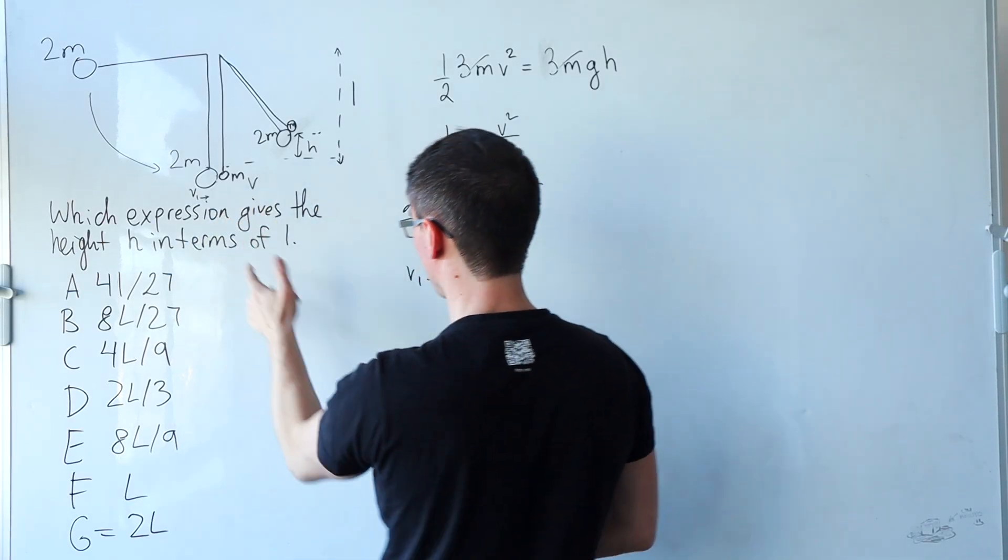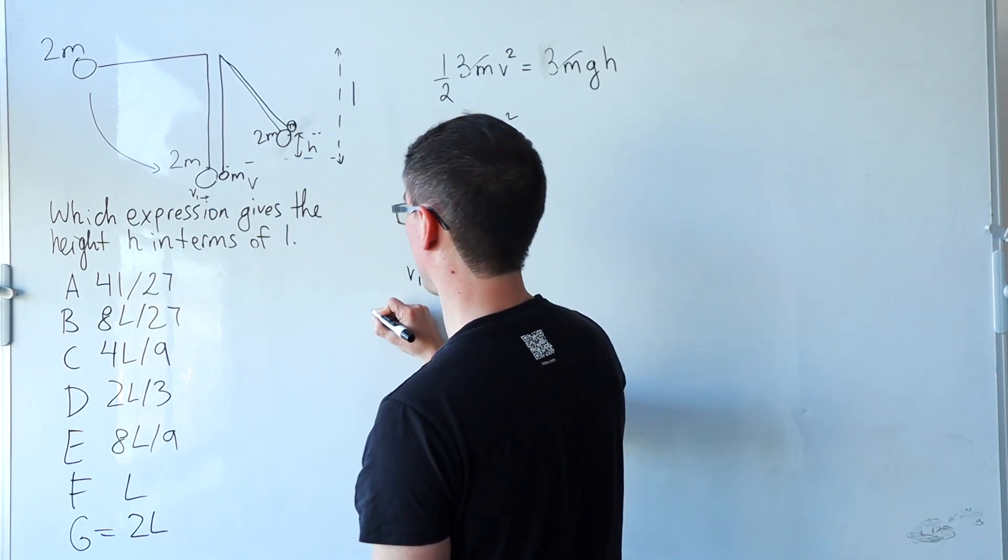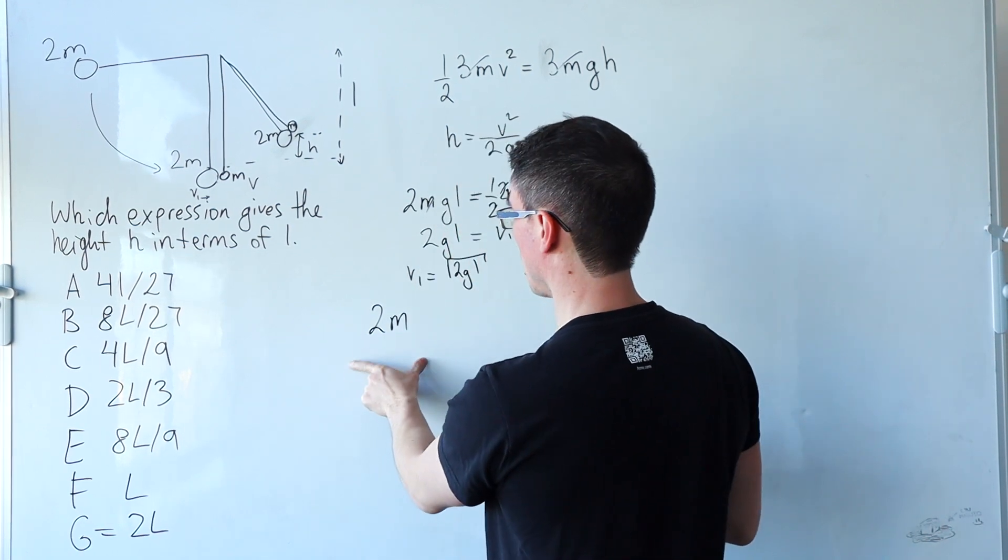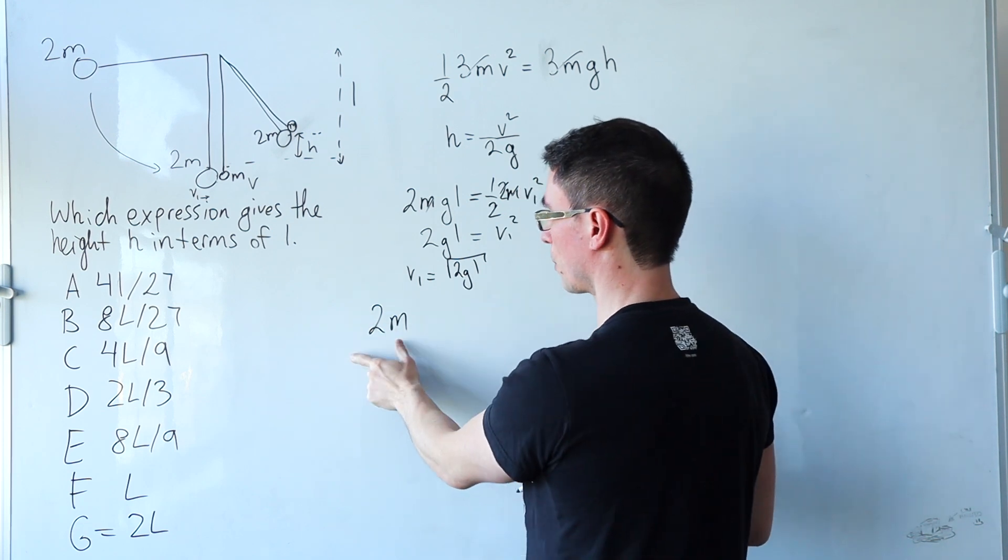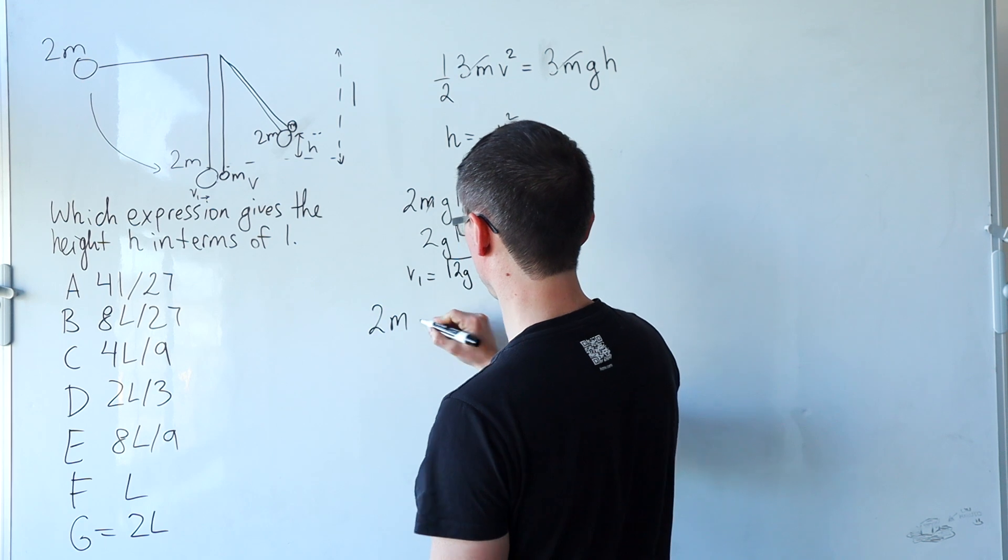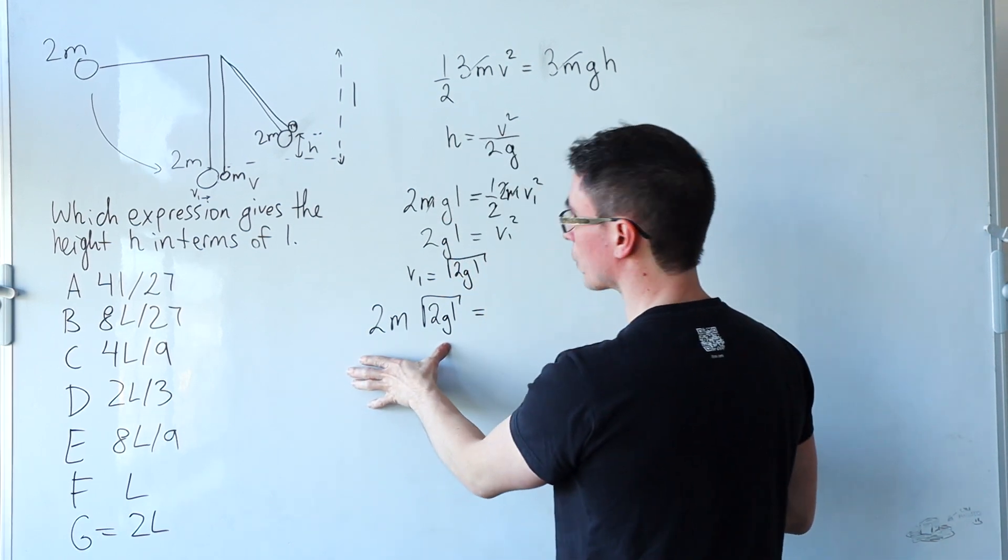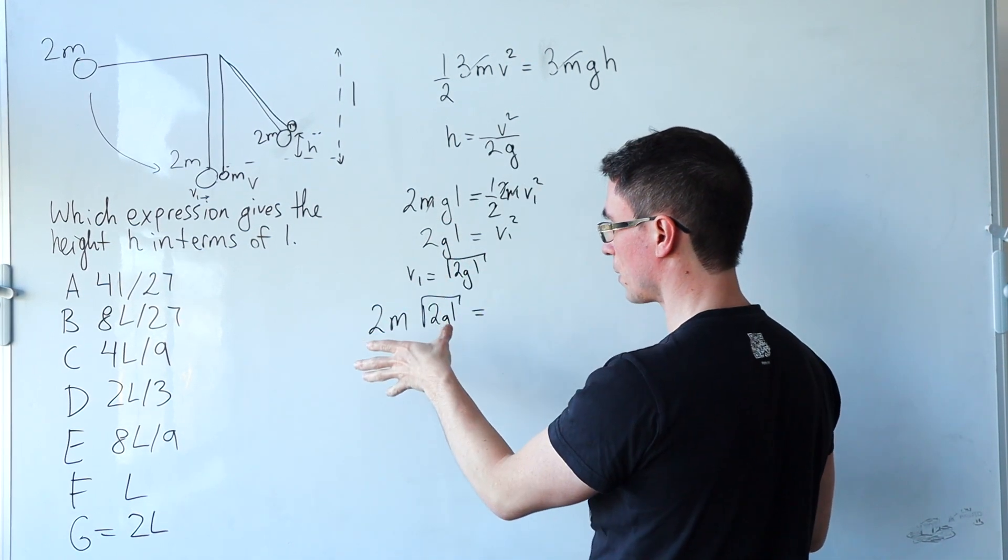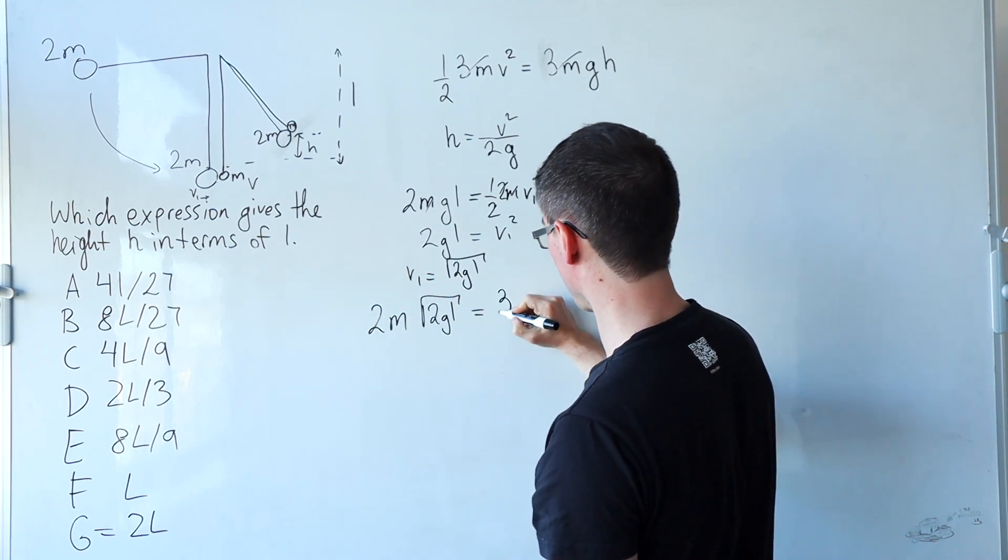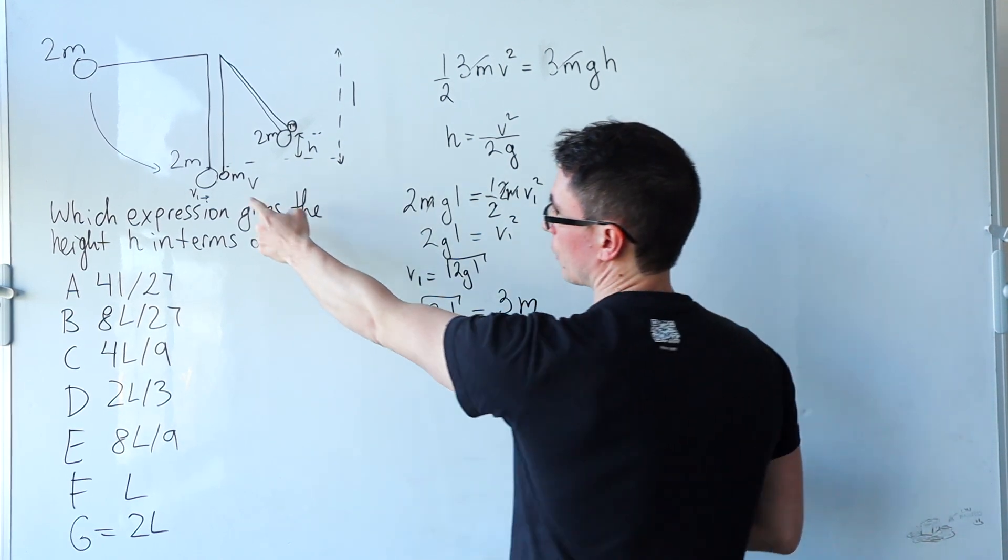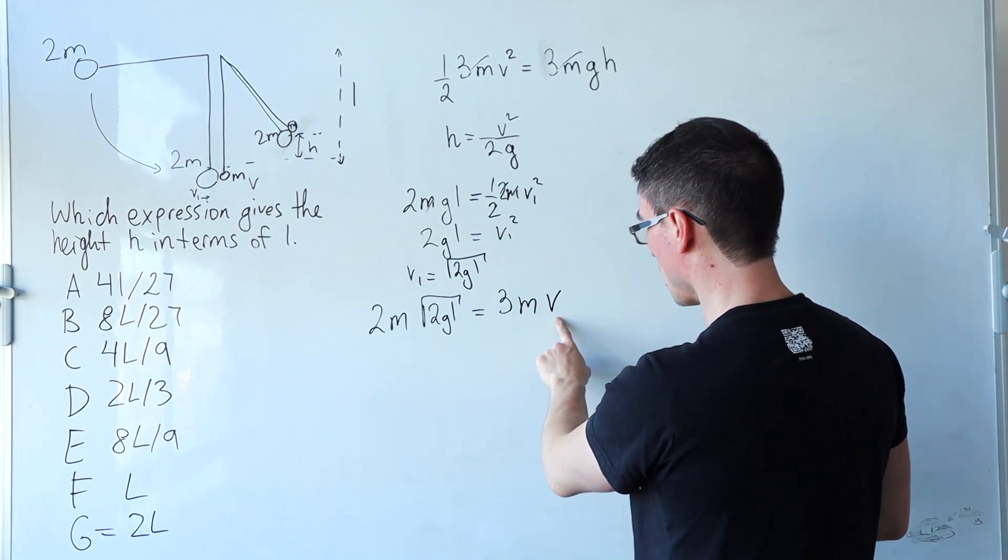So the total momentum in the system beforehand will be given by 2m. So I'm using m times V is equal to a constant. Total momentum before it is going to be 2m times by V1, which is just the square root of 2GL. This will equal to the total momentum after the collision. Now the masses have coalesced, so the total mass will be 3m and the speed at which they're moving is just going to be V.